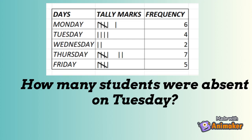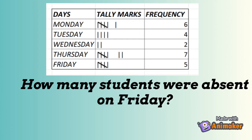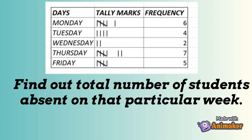Now look at this tally chart and answer a few questions. How many students were absent on Tuesday? You can pause the video and answer. The answer is 4. How many students were absent on Friday? The answer is 5. Find out the total number of students absent during that particular week. The answer is 24.